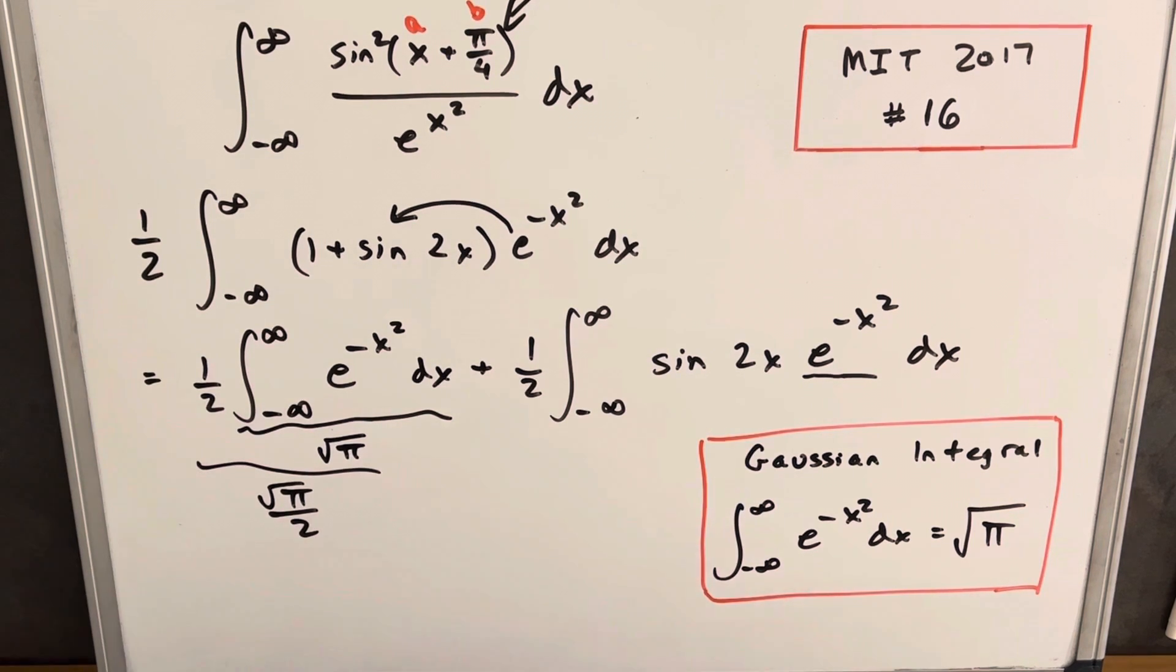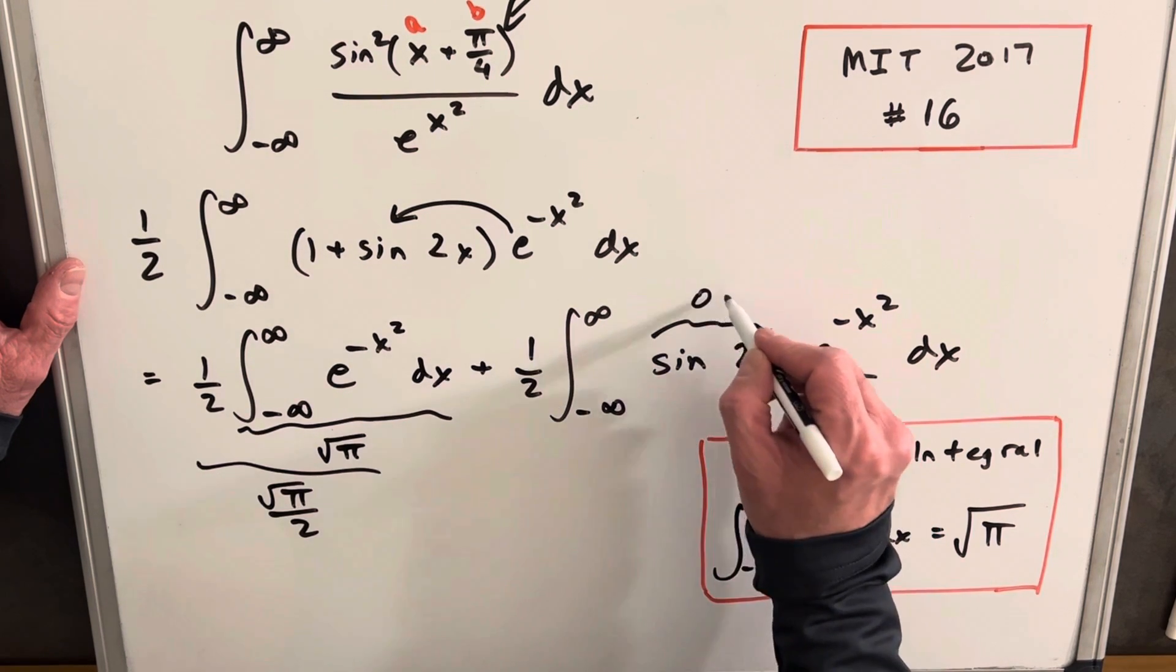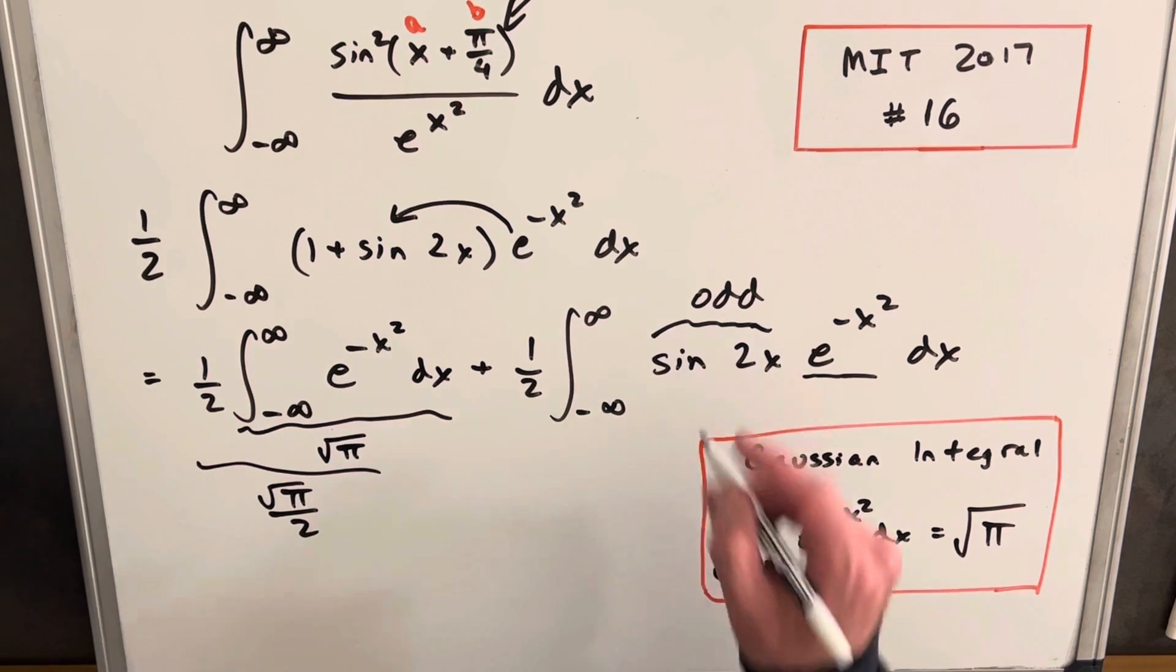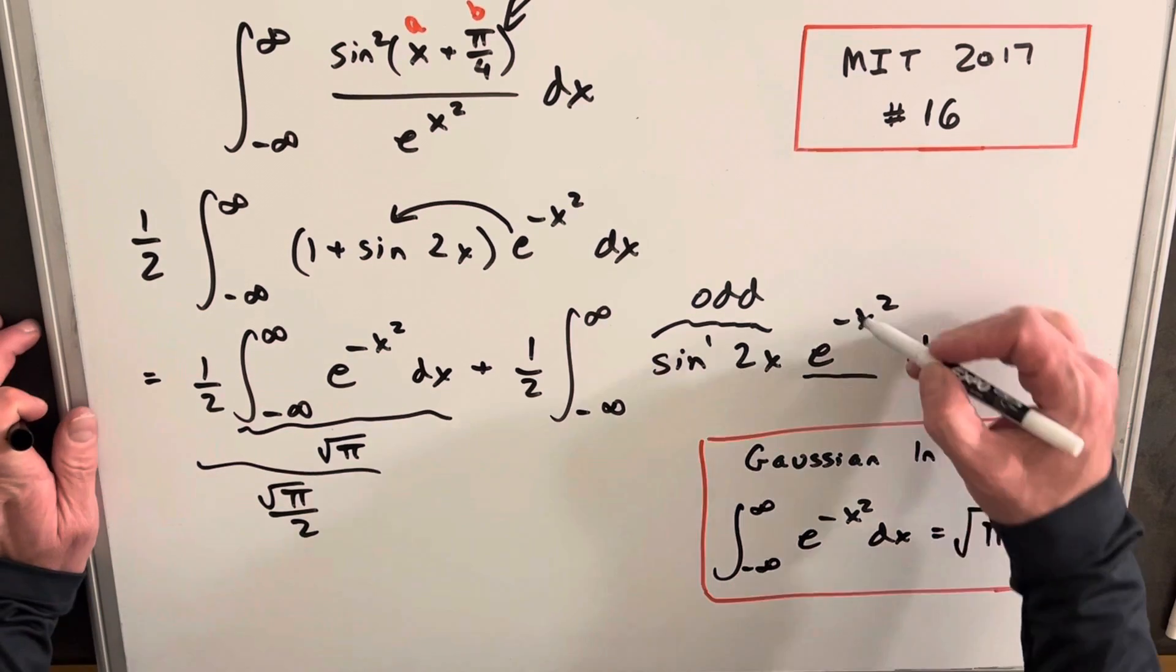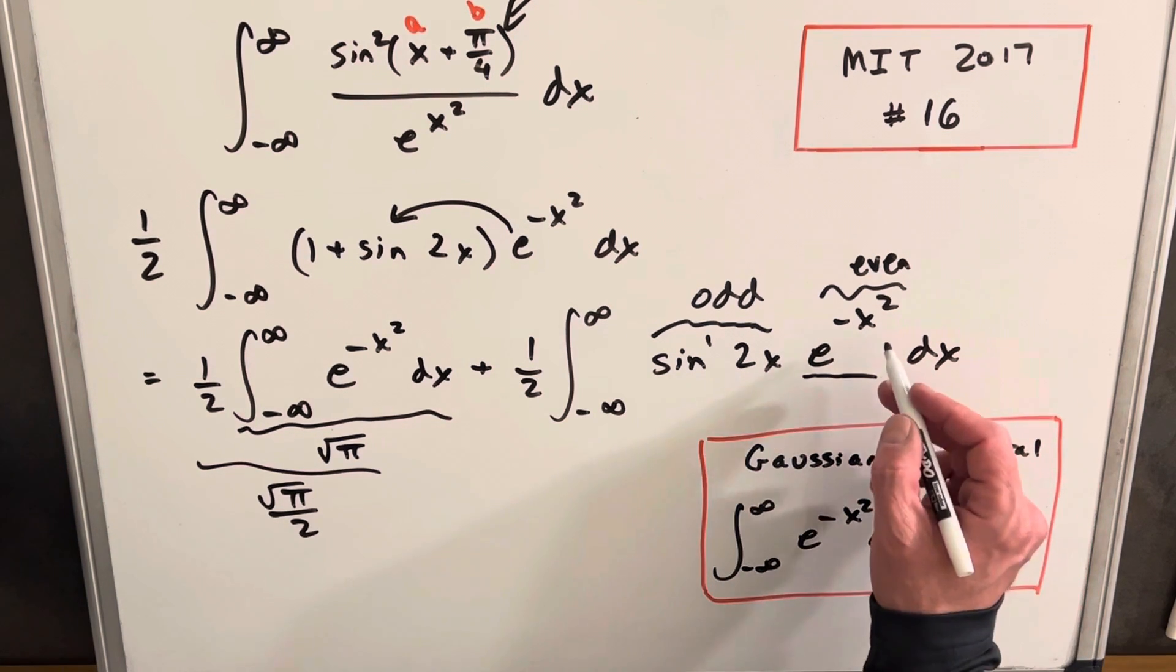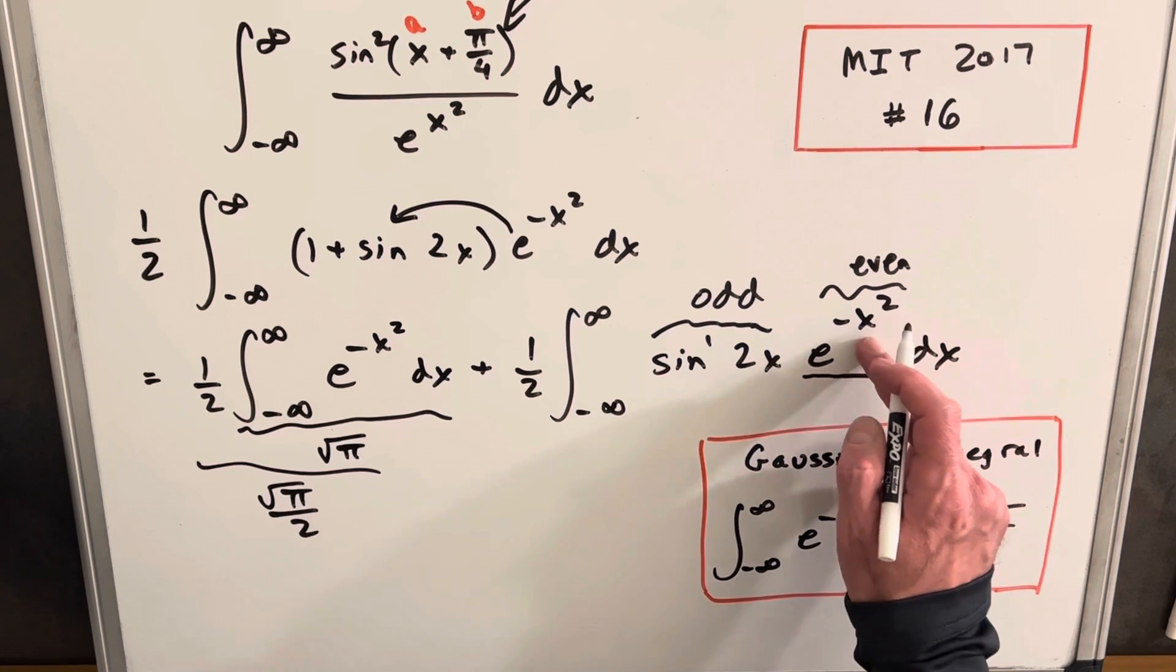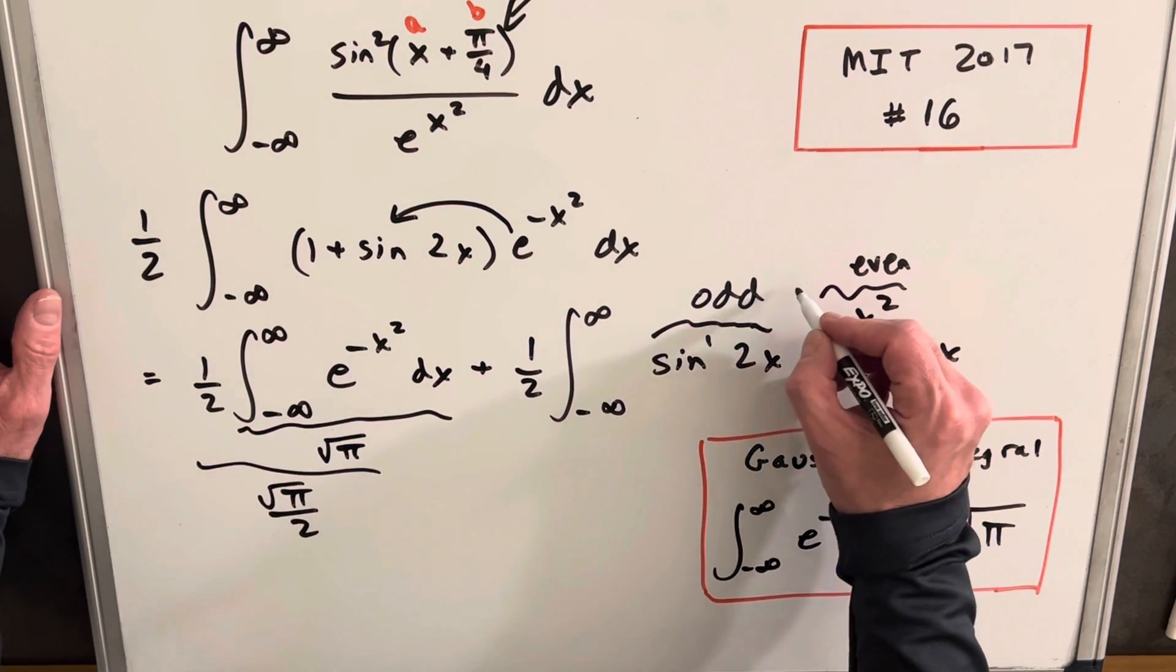And now the good thing to know is sine of 2x is odd. Sine is always odd unless it's squared or something, but just sine to the 1 power is going to be an odd function. But then this piece here is going to be an even function. Now typically an exponential is not even or odd, but in this case because it's squared, you'll notice whatever—if we put a negative value in for x, it doesn't matter, it's gonna be the same as the positive value.